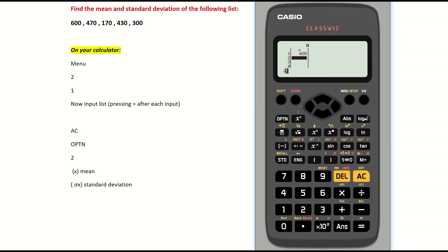Now key in 470 and hit equals. Put in 170 and hit equals. Then 430 and equals. Finally, the fifth number is 300, hit equals to input that number.